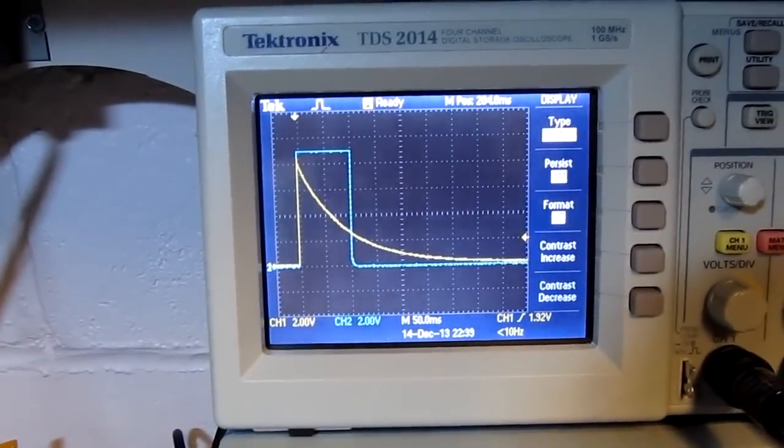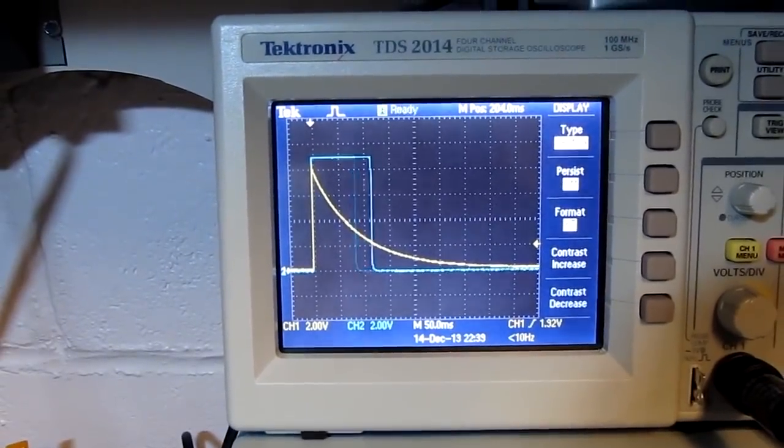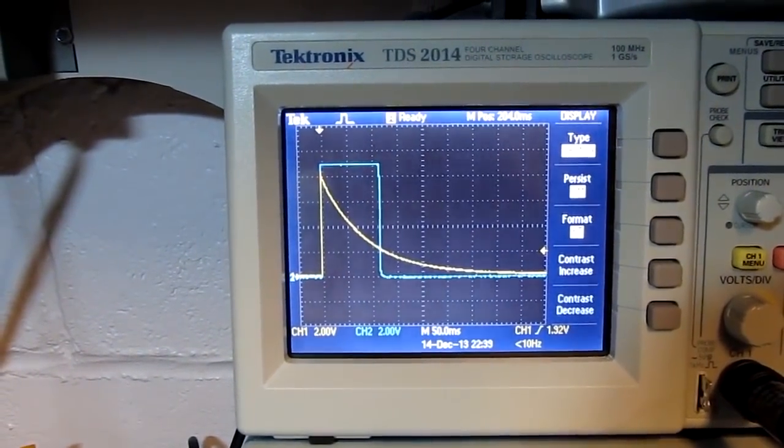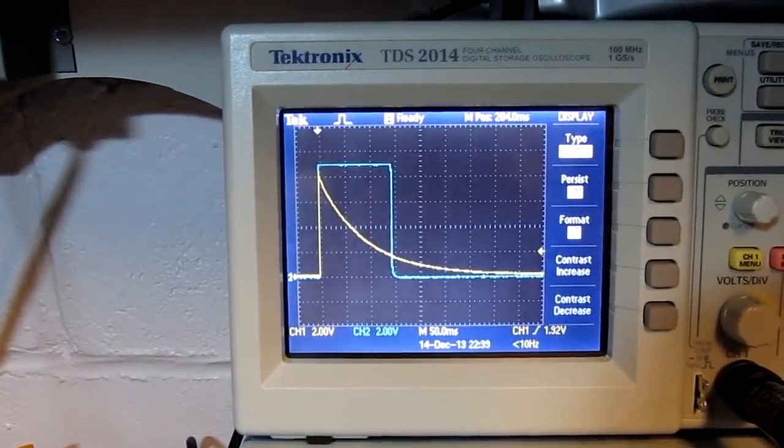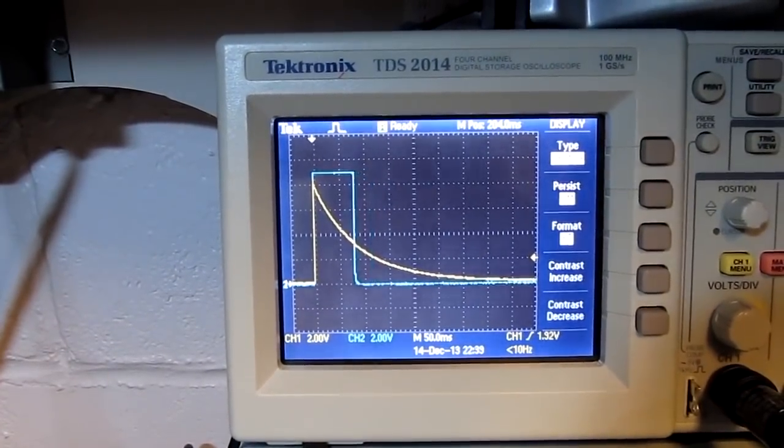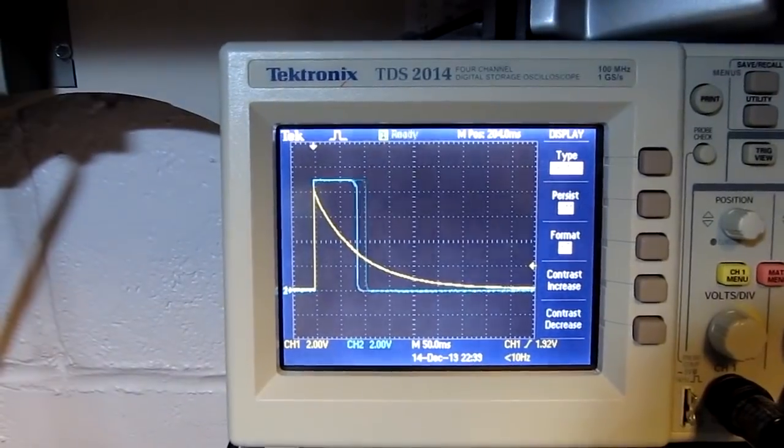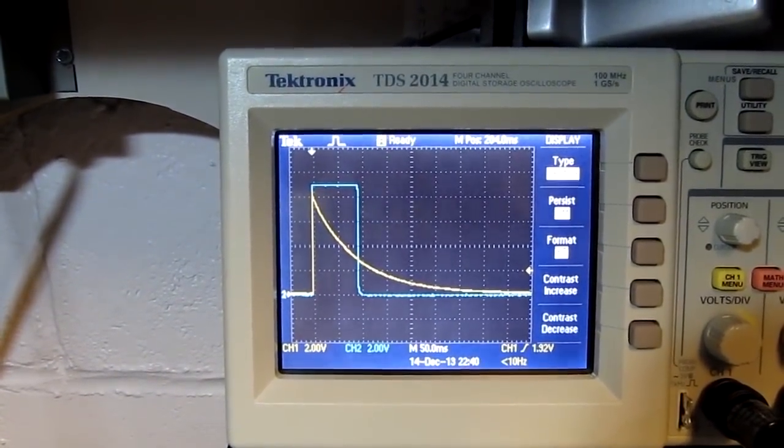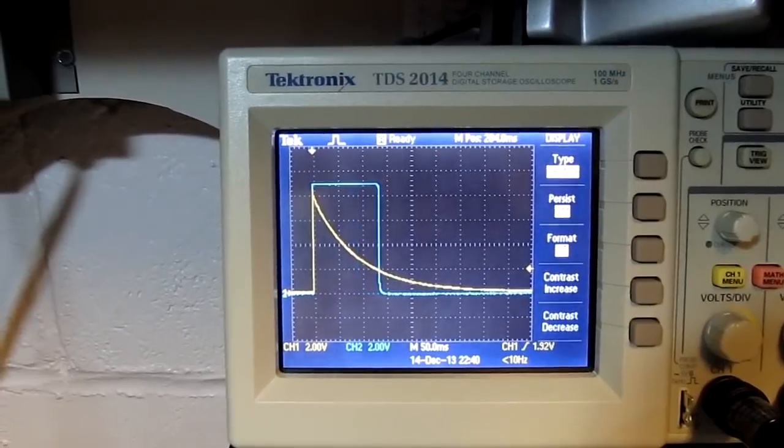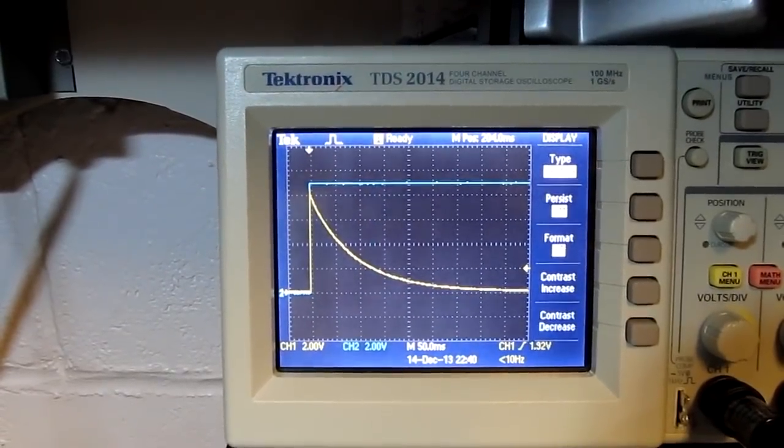On the scope, the yellow trace is the response that the user was asking for. And the blue trace is the trigger input, and he really wanted the output to rise quickly, regardless of whether the trigger input was short, like I'm doing here, or long, like that.